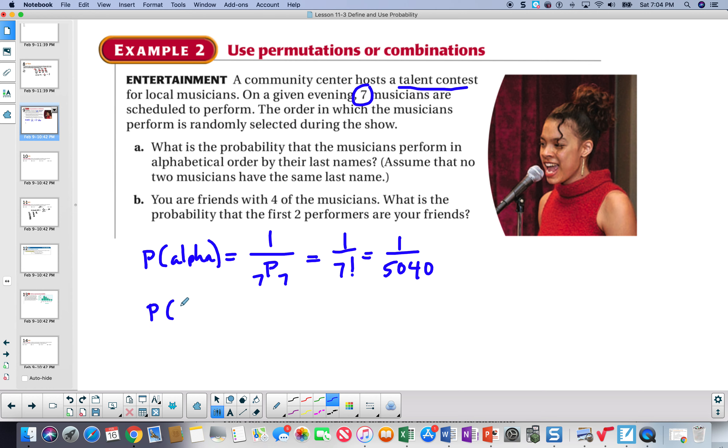Now, let's take a look at probability of having 2 friends when you have 4 friends in the contest. So, the order is not important. So, this will be a combination of 7 being chosen twice. So, these are all the ways that 2 can be chosen. And the favor will be the combination of out of your 4 friends, 2 will be chosen.